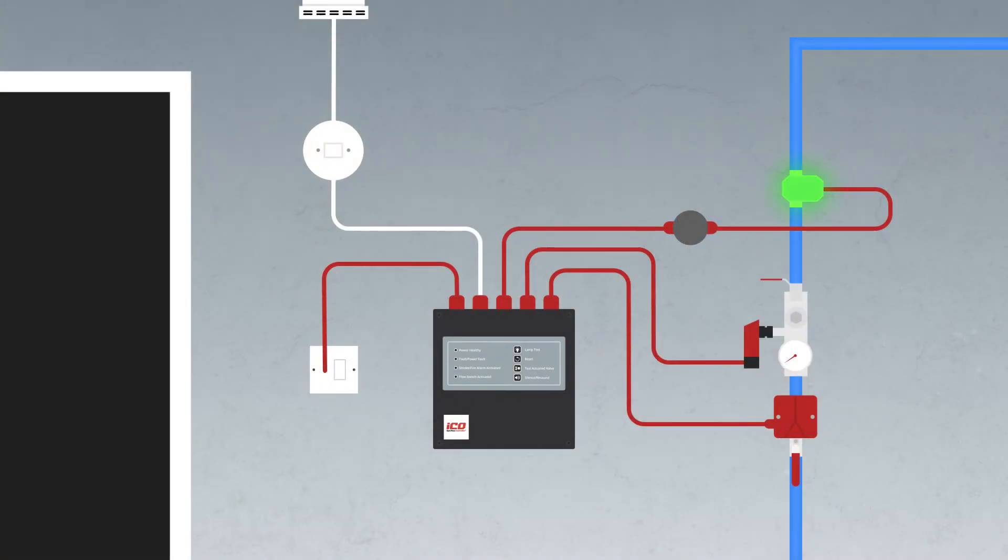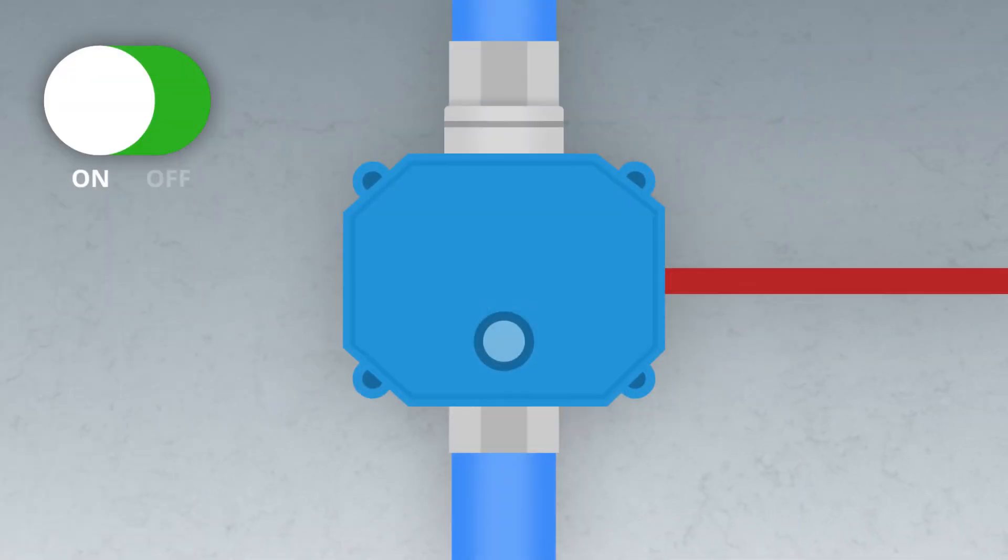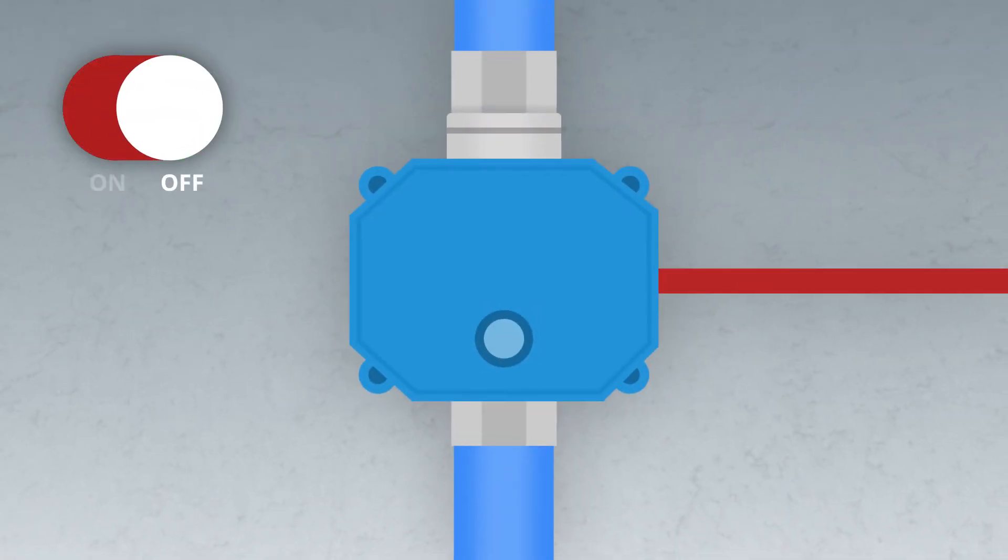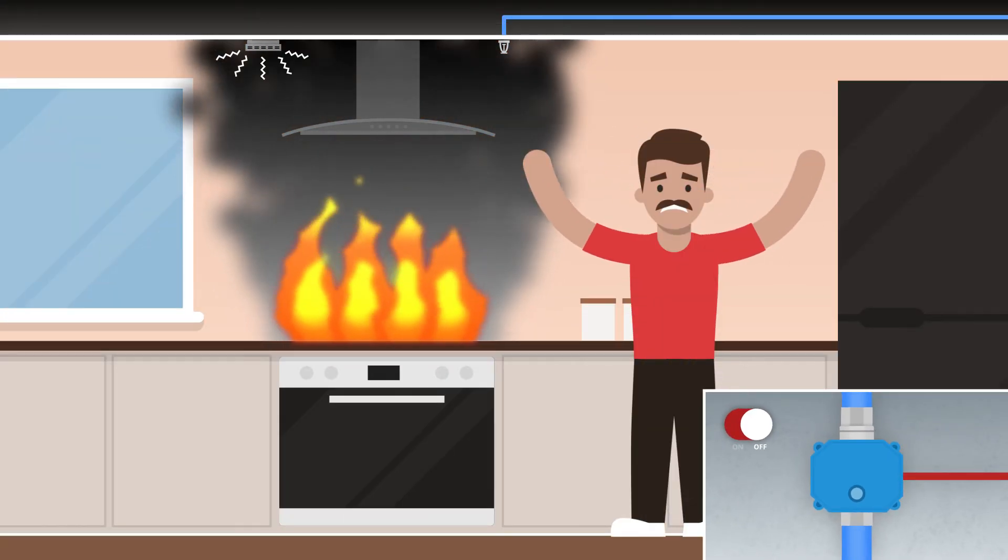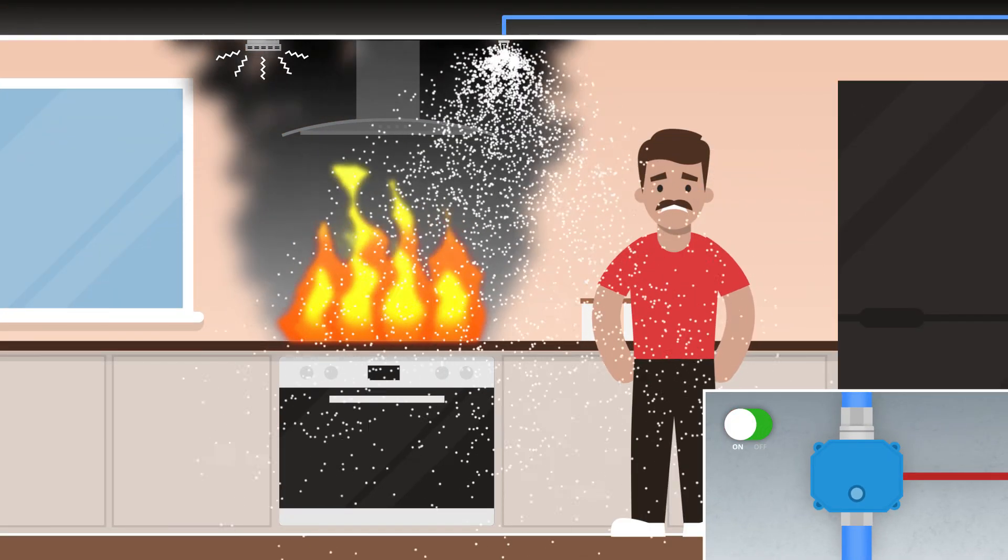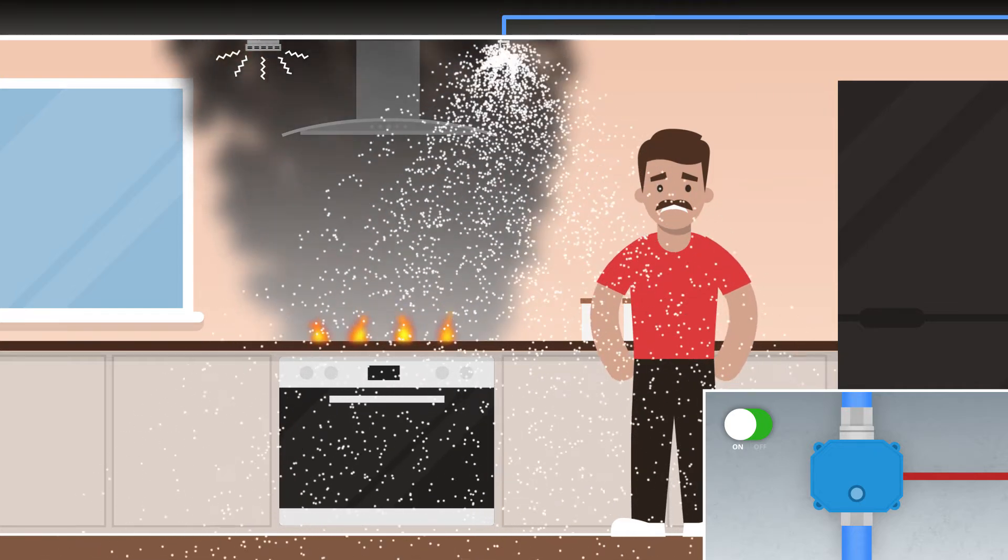The ICO OptiFlow controller has an automatically operating valve that will close or open depending on if there is a pipework leak or real fire. The valve will only reopen when smoke is detected by the smoke detection system.